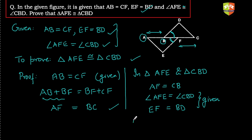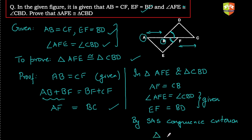Therefore, by the SAS congruence criteria, triangle AFE is congruent to triangle CBD. Be careful about the order of corresponding points: A corresponds to C, F corresponds to B, and E corresponds to D — which is exactly what was asked to prove.